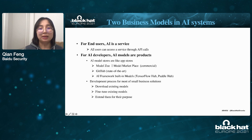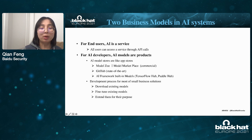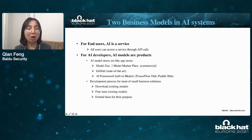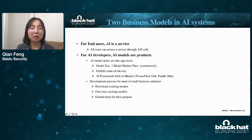There are two business models in AI systems. For end users, AI is a service — all users can access services through API calls. For AI developers, AI models are products. More and more developers would like to purchase or download models from third-party stores, called model stores, such as ModelZone, GitHub, TensorFlow Hub, or Paddle Hub. Developers will download these models, reuse them, or build their own models based on these third-party models.